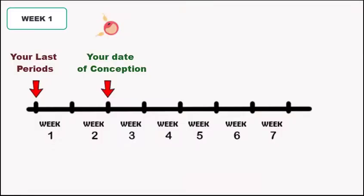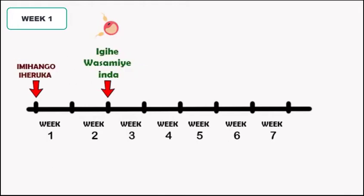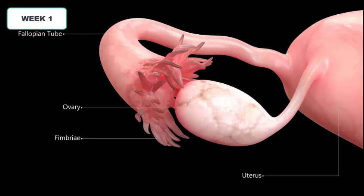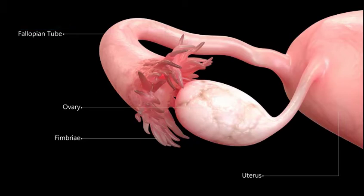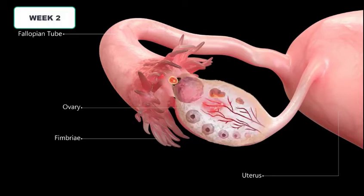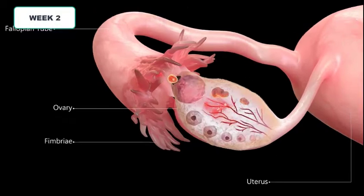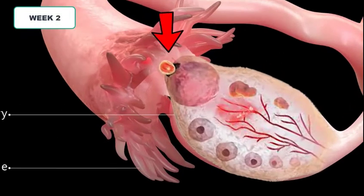Week one is the first seven days from your last menstrual period. During this week the ovule is growing and has not been released yet. In week two the egg is now mature and it is time for it to be released.